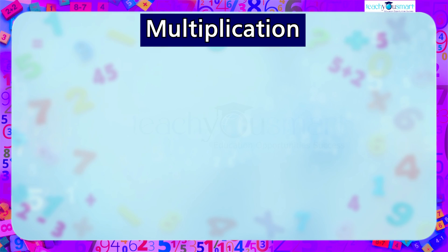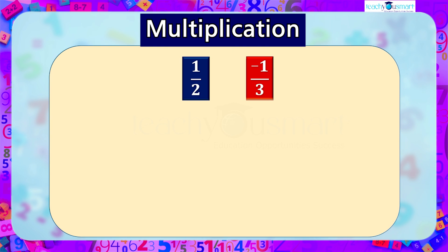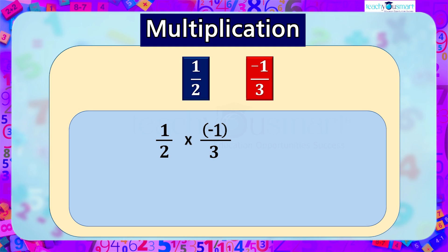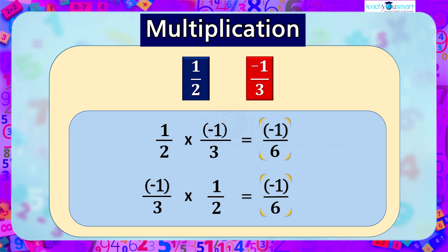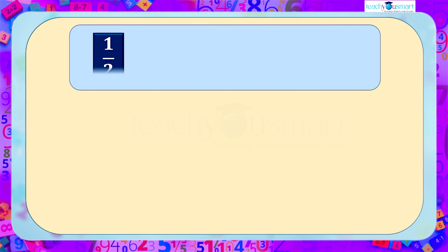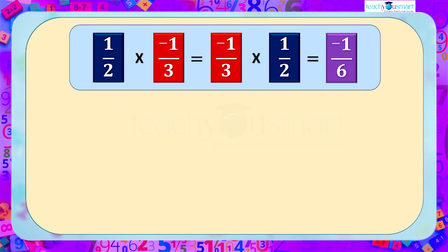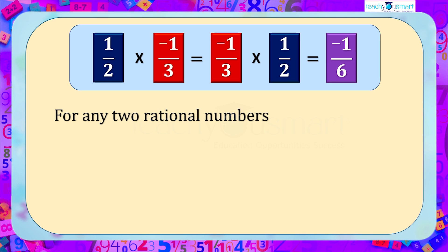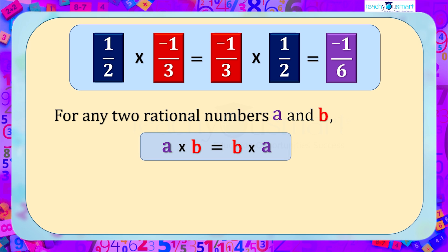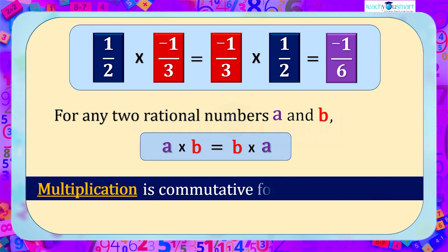Next let's look at multiplication. On multiplying one by two and minus one by three we get minus one by six. And minus one by three multiplied by one by two is also equal to minus one by six. Changing the order of numbers does not affect the result. So for any two rational numbers a and b, a multiplied by b equals b multiplied by a. Therefore multiplication is commutative for rational numbers.